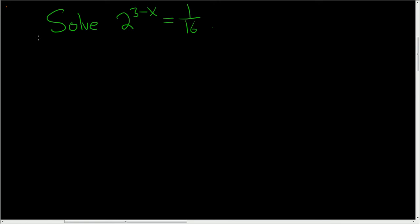So we're asked to solve this exponential equation: 2 to the 3 minus x equals 1 over 16.